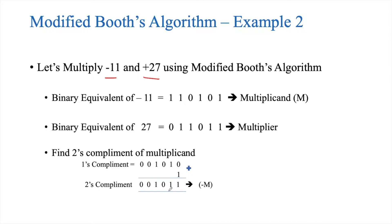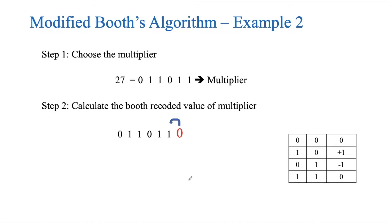With all these assumptions, let us start Booth's recoding. To recode the multiplier value, we select the multiplier which is 27, with binary equivalent 0 1 1 0 1 1. We append a bit 0 after the LSB to start the recoding process. The recoding rules are: a transition from 0 to 1 gives minus 1; 0 to 0 gives 0; 1 to 0 gives plus 1; 1 to 1 gives 0.